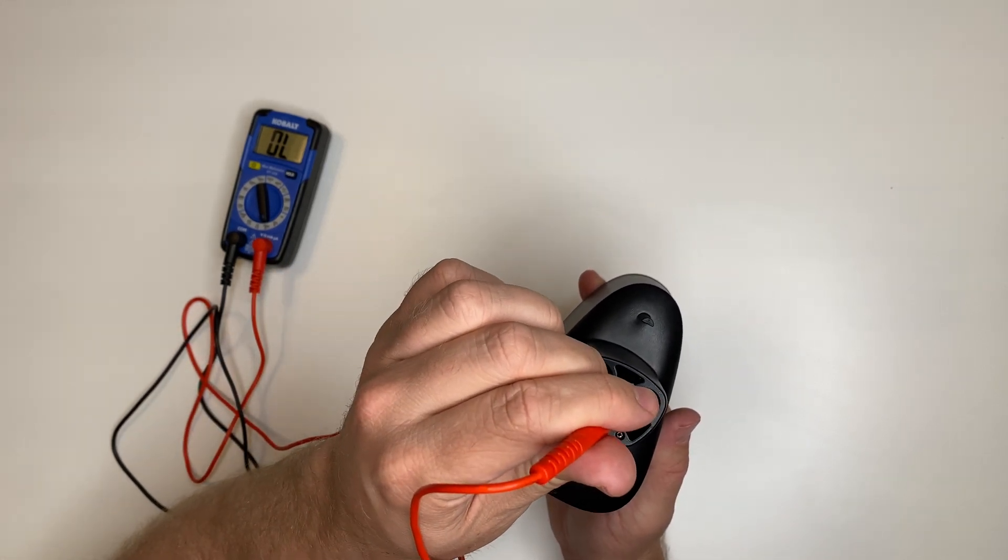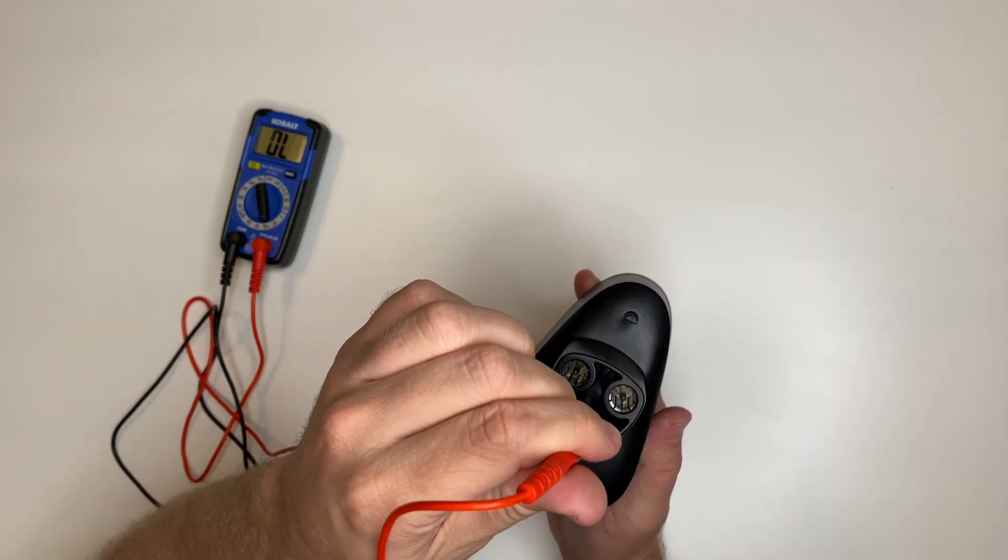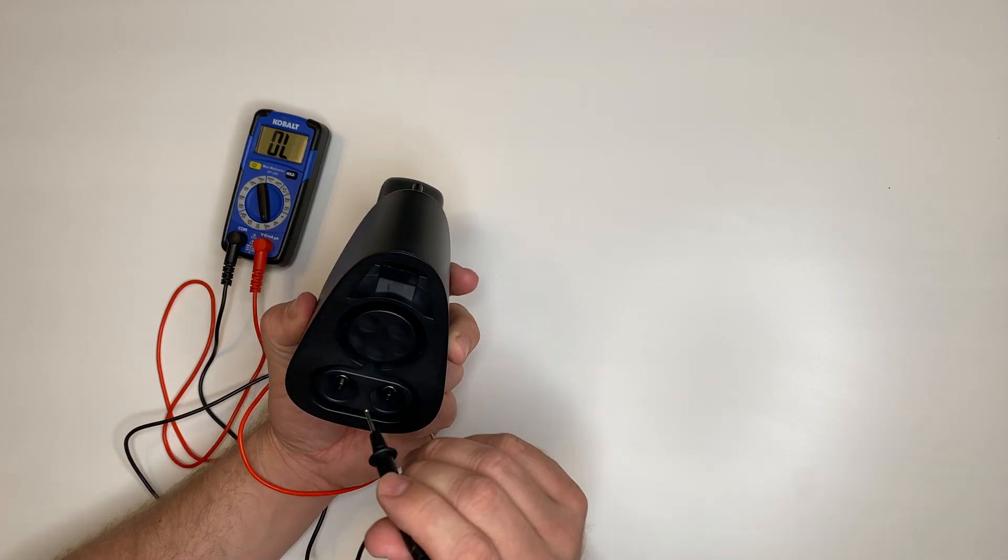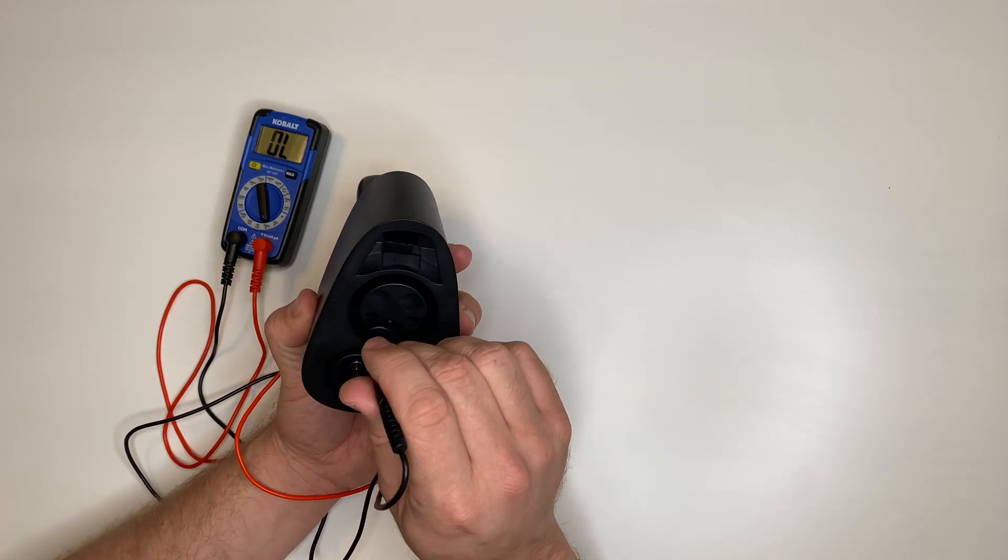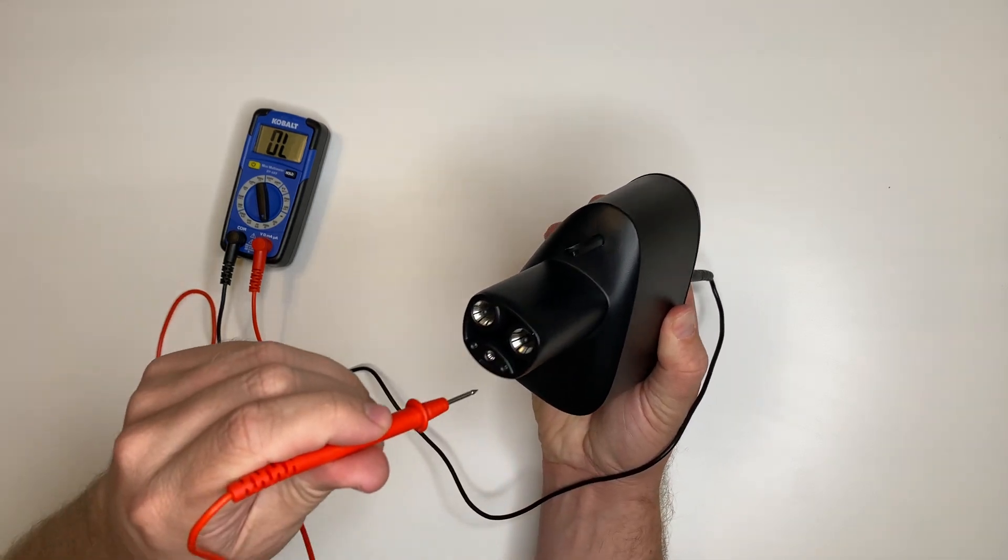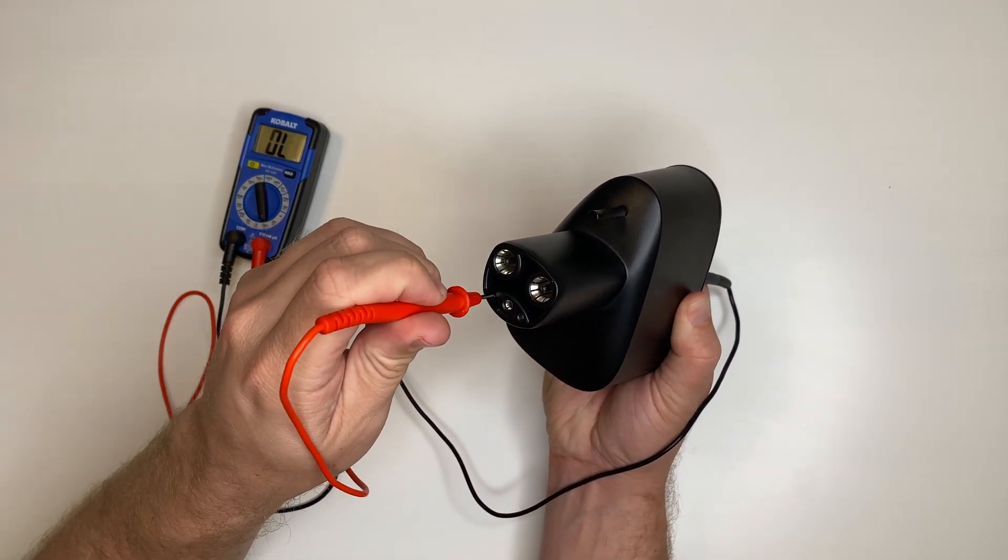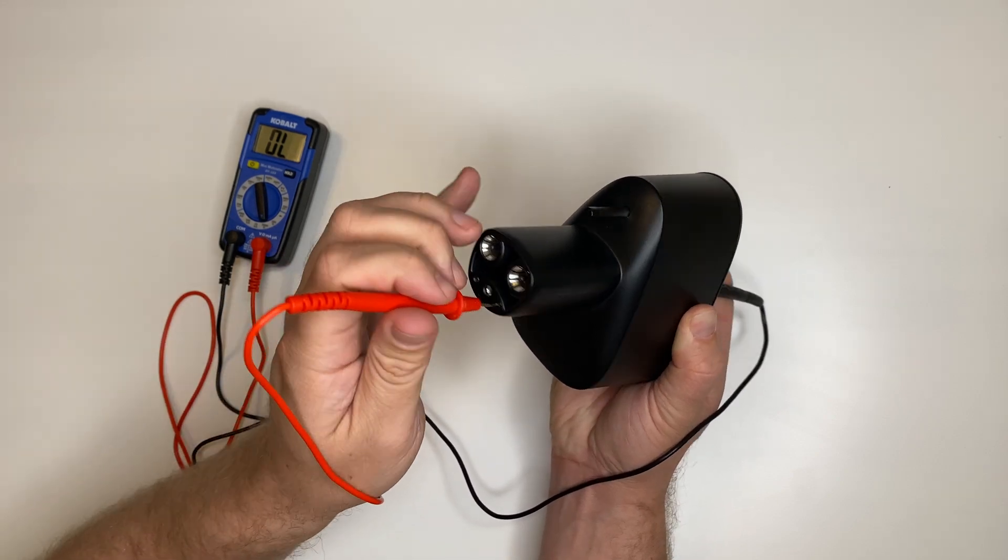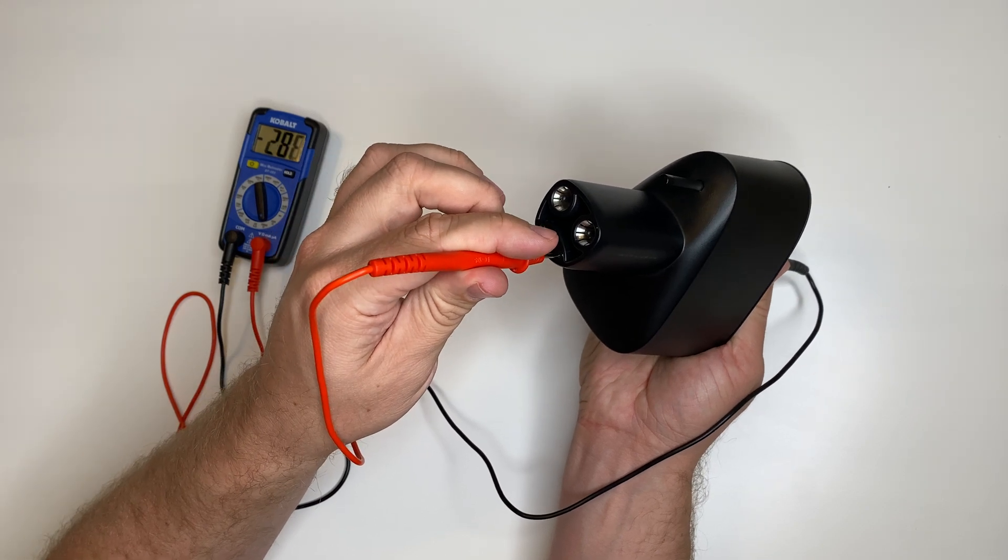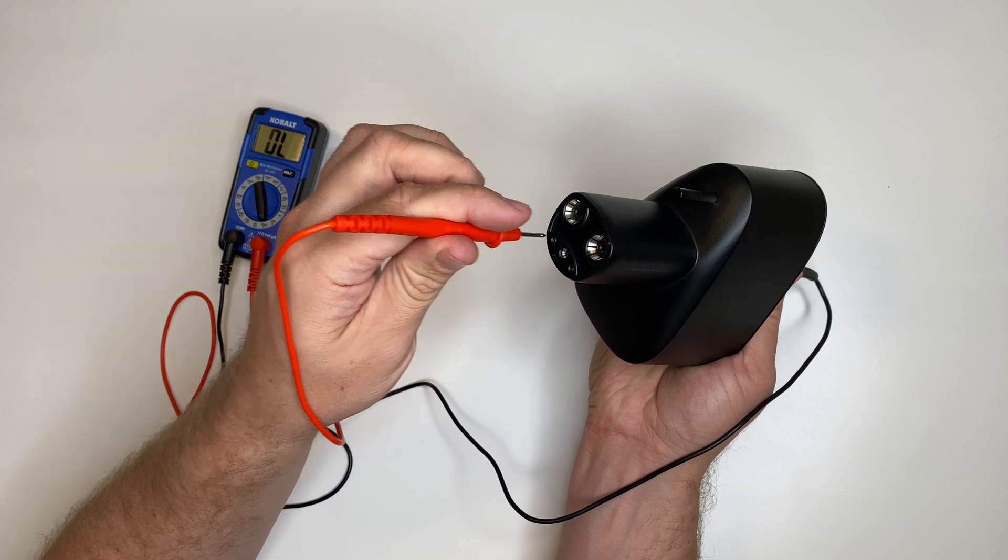The same applies for contact 4 over here, which is the control pilot. On the corresponding side, you see zero ohms, and any of the other pins show no connection.